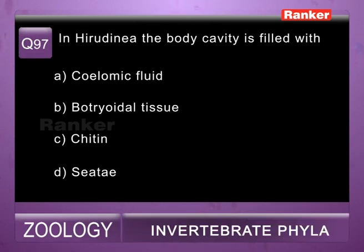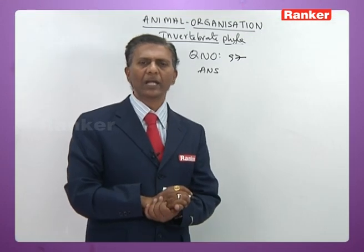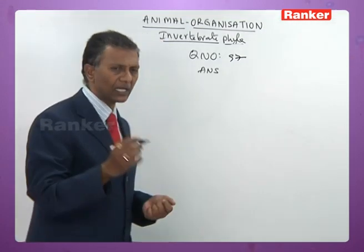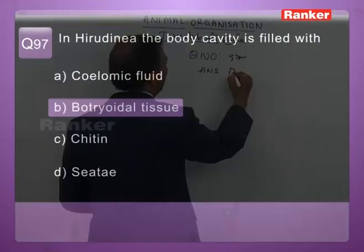Question ninety-seven: in Hirudinea, body cavity is filled with — a) coelomic fluid, b) botryoidal tissue, c) chitin, d) setae. Botryoidal tissue is the correct answer. So ninety-seventh question correct answer is b) botryoidal tissue.